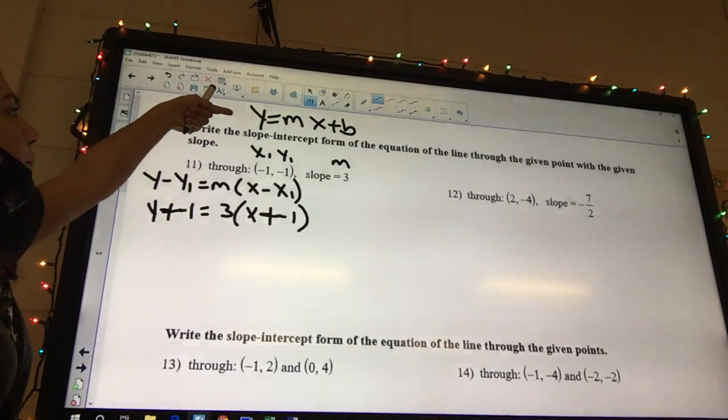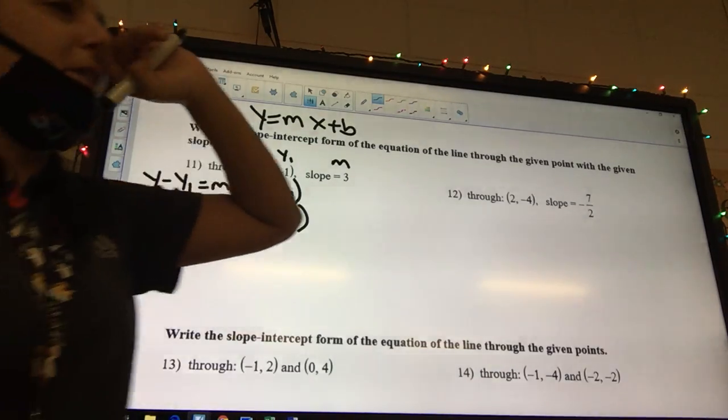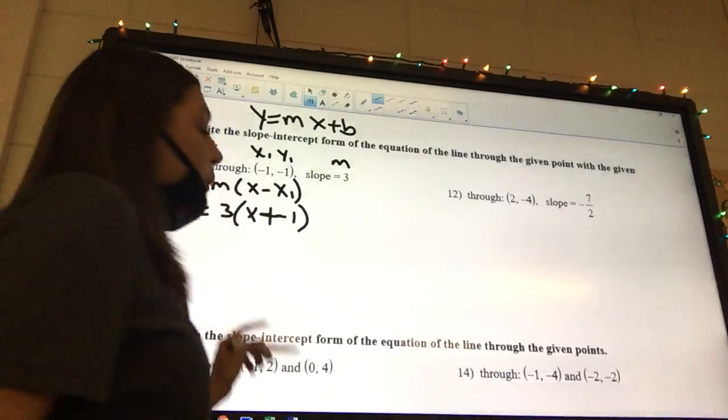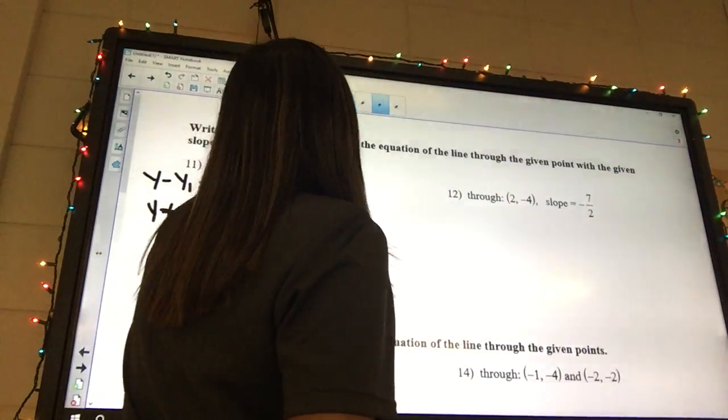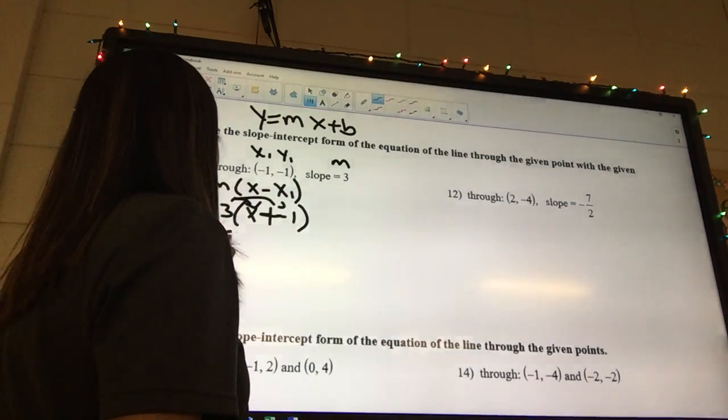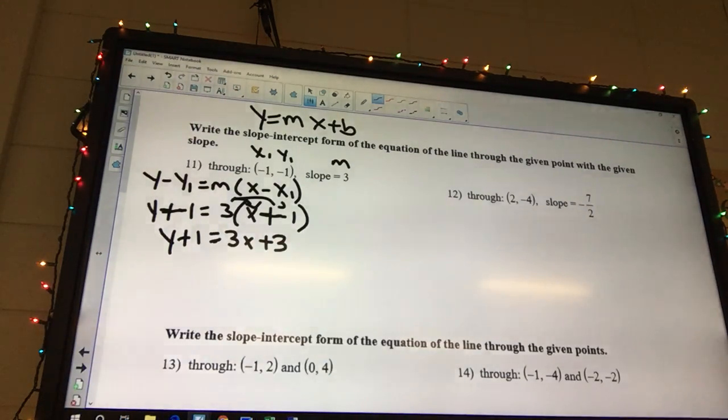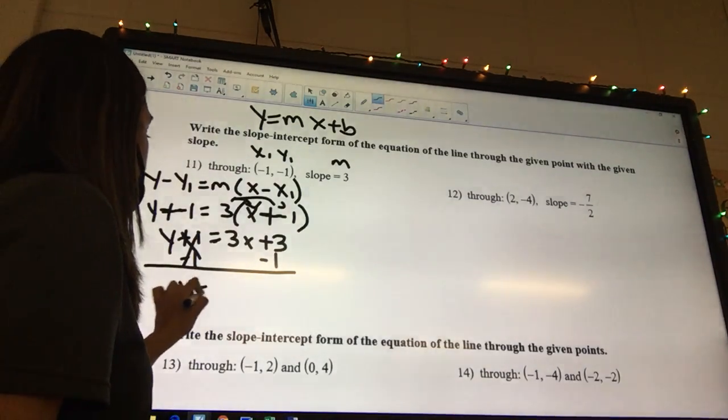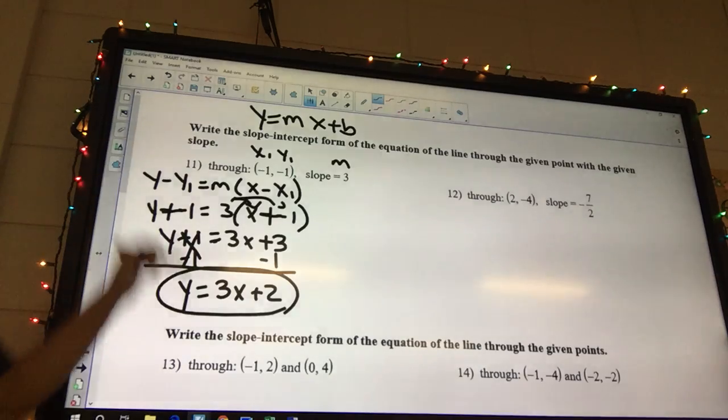Does this have parentheses in it? No. So we need to distribute. So I got y plus 1 equals 3x plus 3. Now we need to subtract the 1 from both sides. So we got y equals 3x plus 2. And now our forms kind of match up. So we know we're done.